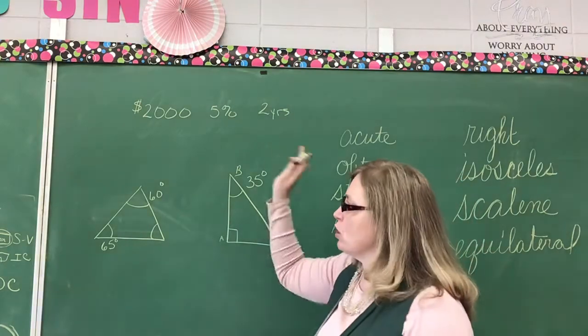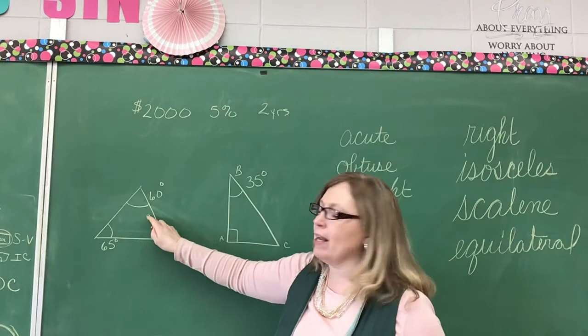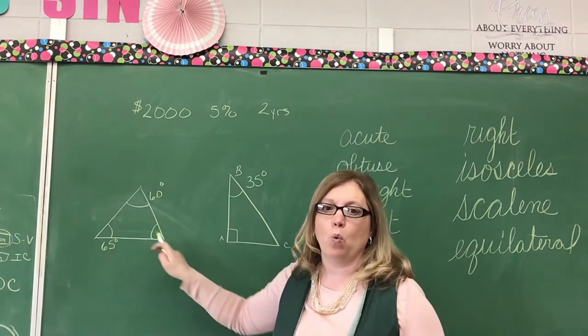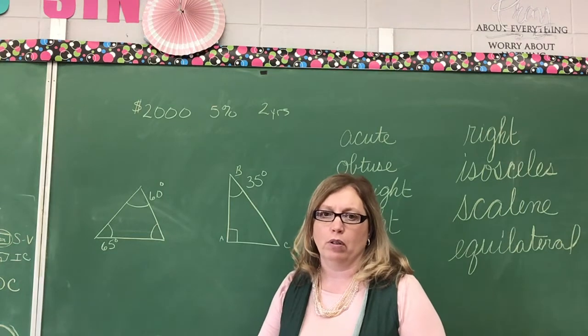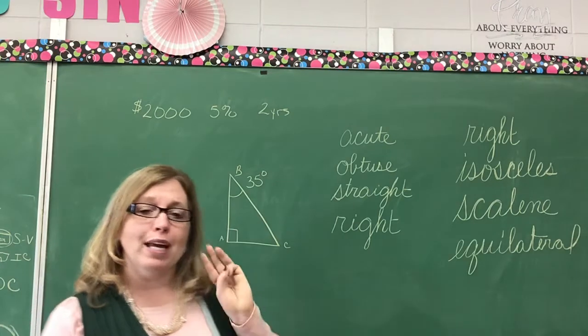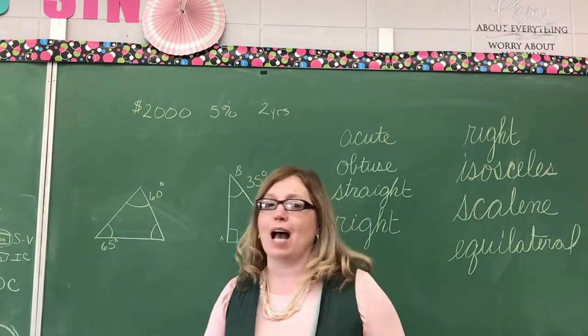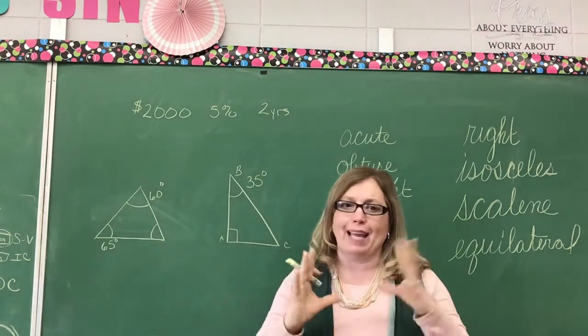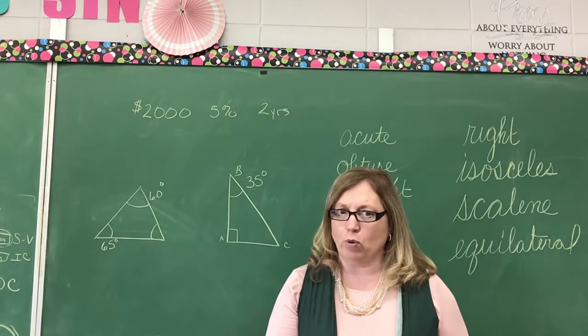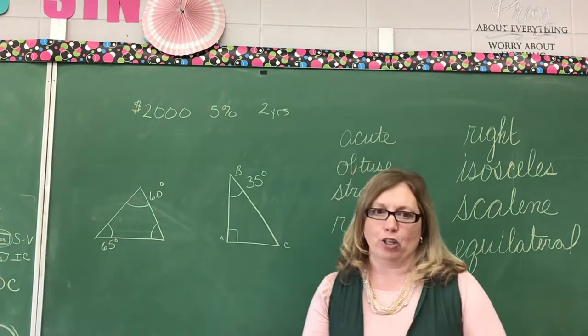I'm going to start here just so I can erase. I have a triangle. It has a 60 degree angle and a 65 degree angle. What is the measurement of that angle? How do I find out? What fact do I know? I know that when you take any triangle, no matter its size, no matter how big the angles or small the angles, when you add the three angles together, they always equal what? 180 degrees.